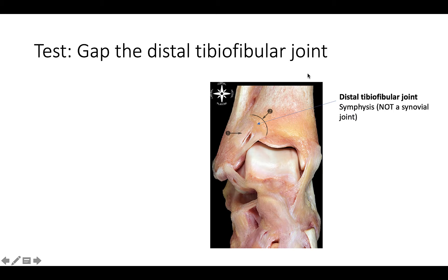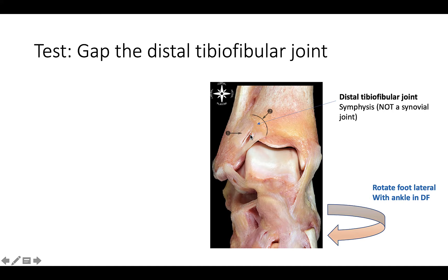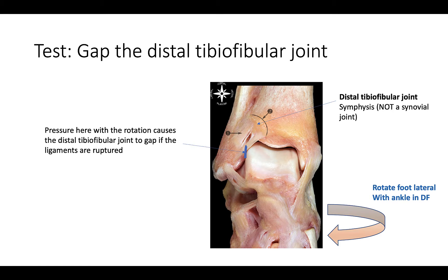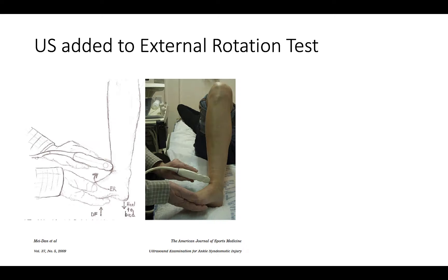Here again is an anterior view of the talocrural joint. You can imagine that if you twist the trochlea of the talus into external rotation, it would cause the mortise to gap, potentially damaging the distal tibiofibular joint. There's an explanation of the gapping and an arrow indicating the direction of external rotation.